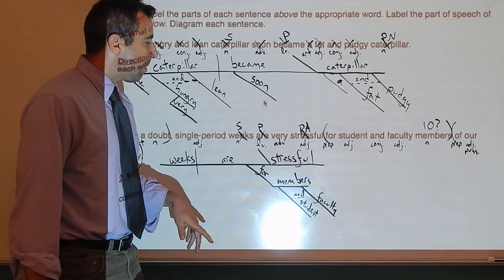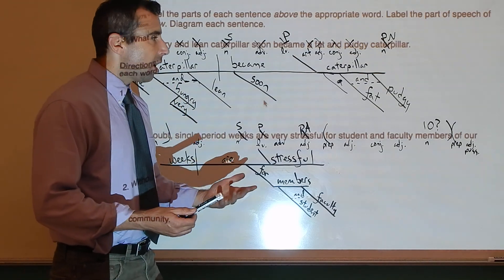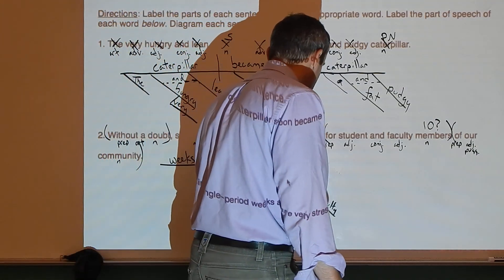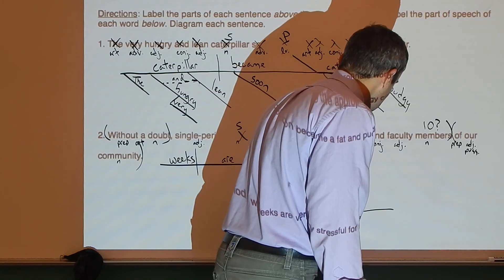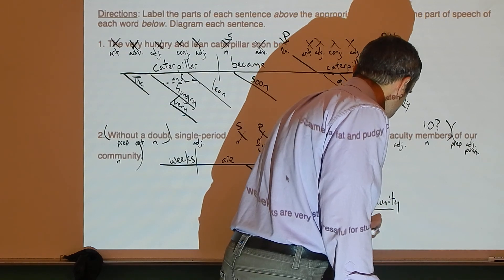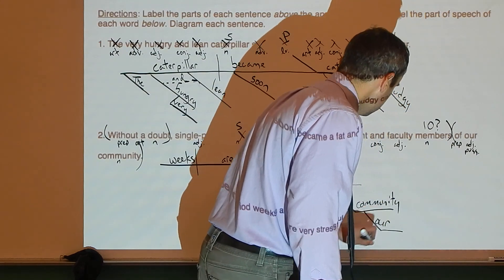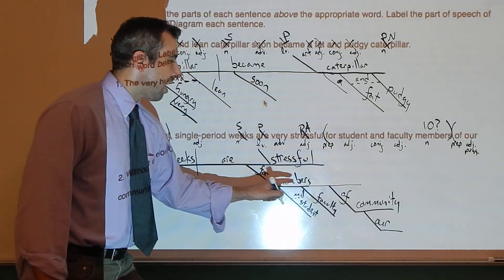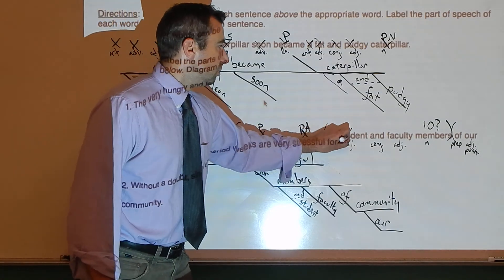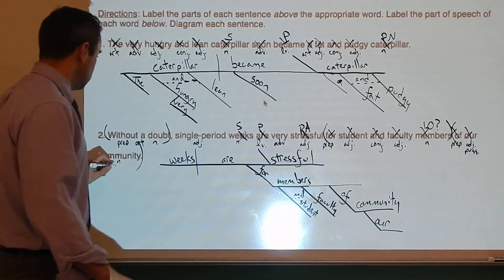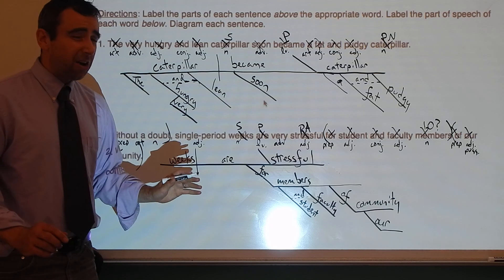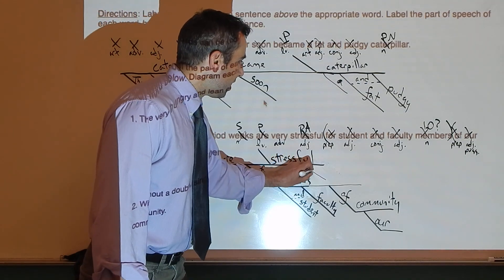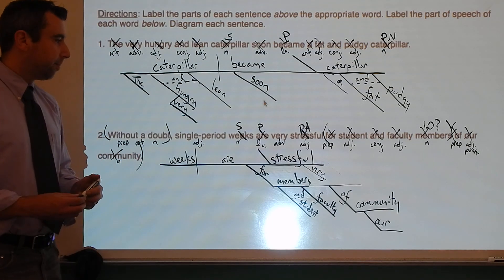So we get 'for student and faculty members' in our diagram. What else describes members? Members of our community — so we diagram 'of our community' coming off of members. Now I want to diagram 'very' before I forget: how stressful? Very stressful. Very acts as an intensifier telling us just how stressful it is.